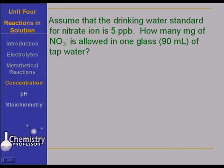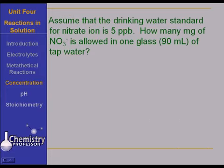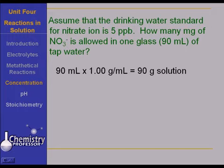Let's try this problem. Assume the drinking water standard for nitrate ion is 5 parts per billion. How many milligrams of nitrate is allowed in one glass? And let's assume the glass is a 90 milliliter glass of tap water. Well, 90 milliliters times 1 gram per milliliter is 90 grams of solution. Again, whether you have to do it this way or not is up to you and your instructor.